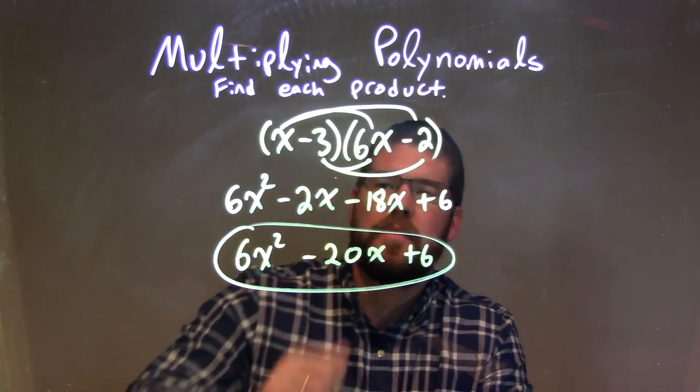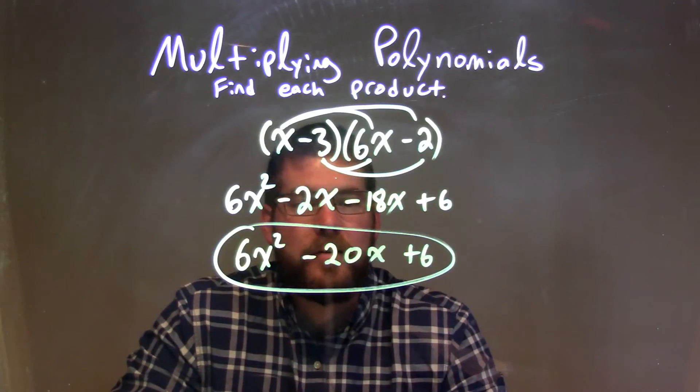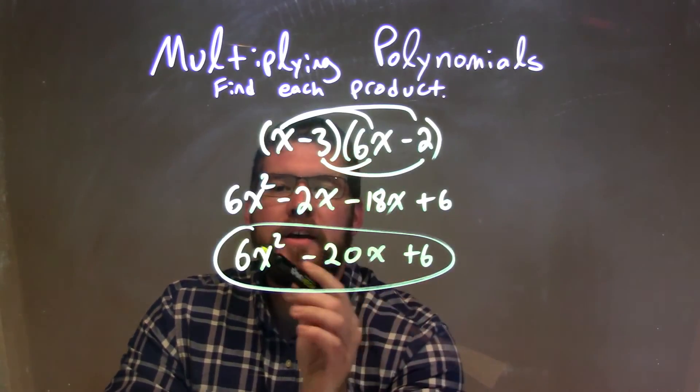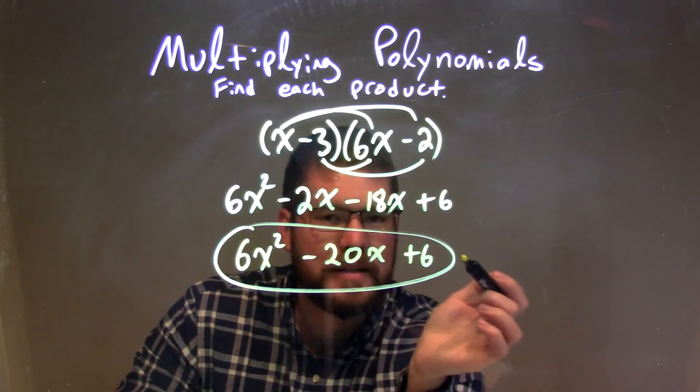We combine our like terms, minus 2x and minus 18x give me minus 20x, and so my final answer here is 6x squared minus 20x plus 6.